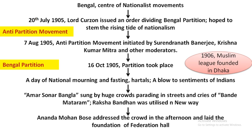Even Lord Curzon visited East Bengal, and clearly, in a campaign, he said that this partition was made so that the Muslim community could also send their representatives to the legislative councils. Because if Bengal as a whole remained one province, the Hindu majority would dominate and Muslim representatives could never easily be elected. Creating a separate Muslim majority province would allow Muslims to easily win elections to the legislative council. This was the point — Lord Curzon used partition to follow the divide and rule policy.